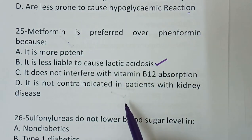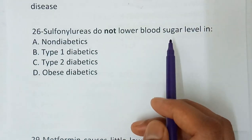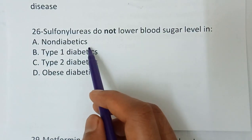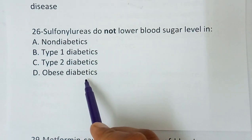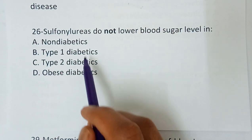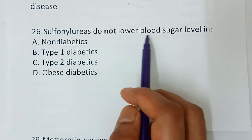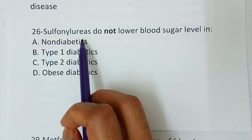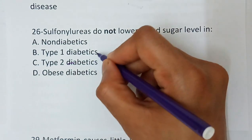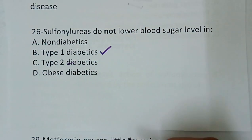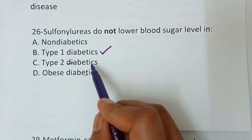Question number 26 — sulfonylureas do not lower blood sugar level in: option A, non-diabetics; option B, type 1 diabetics; option C, type 2 diabetics; option D, obese diabetics. The correct answer is type 1 diabetics. For type 1 diabetics, there is only one choice for treatment — that is insulin. Only insulin is the choice.